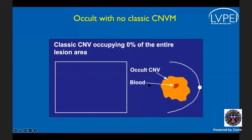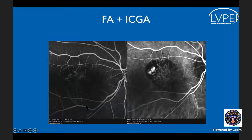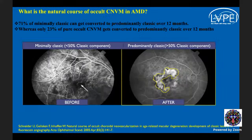Remember that occult CNVM on FA corresponds to type 1 on OCT, meaning it is under the RPE. Classic CNVM on FA corresponds to a lesion above the RPE on OCT. For PCV, FA shows an occult pattern because PCV is type 1 aneurysmal CNVM — all under the RPE. So on FA you won't see a well-delineated membrane, but ICG will pick it up very nicely with the branching vascular network and polyps.